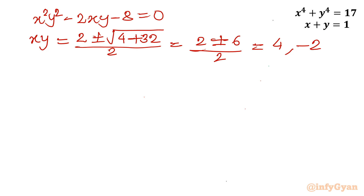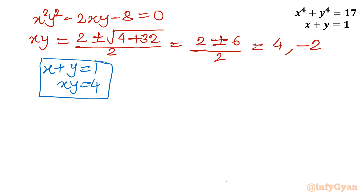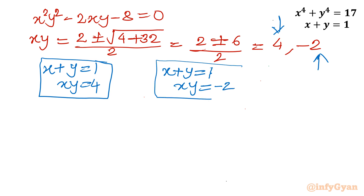We now frame two systems of equations. System 1: x + y = 1 and xy = 4. System 2: x + y = 1 and xy = −2. We need to solve both systems for the real values of x and y.